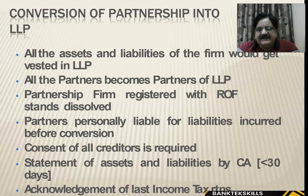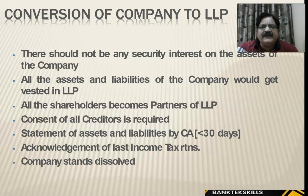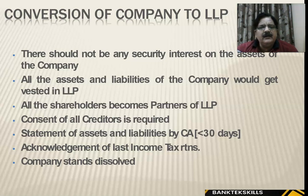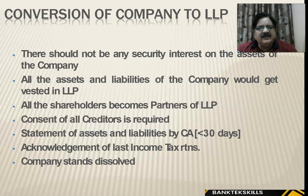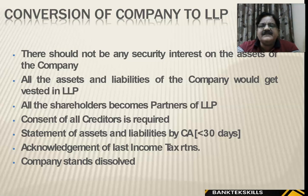Conversion of a company to LLP: even a private limited or public limited company can be converted into LLP. There should be no security interest or charge on the assets of the company — free assets are required. All assets and liabilities of the company get vested in the LLP, all shareholders become partners of the LLP. Consent of all creditors is required, a statement of assets and liabilities by a CA should be completed within 30 days, and acknowledgement of the last income tax return is needed. The company then stands dissolved.